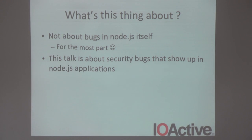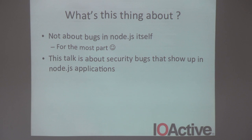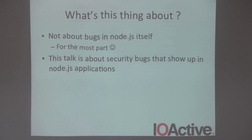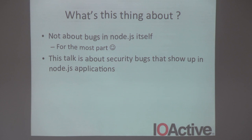This talk isn't about Node.js itself — it's not about bugs in Node.js. It is about bugs in Node.js applications. It's a subtle but big difference: one is native code, one is JavaScript, very different types of bugs. Near the end I'll dive into a little Node.js C++ detail to give context.